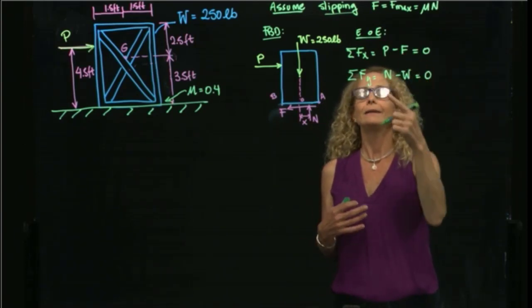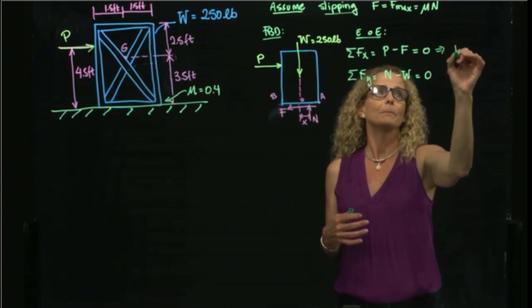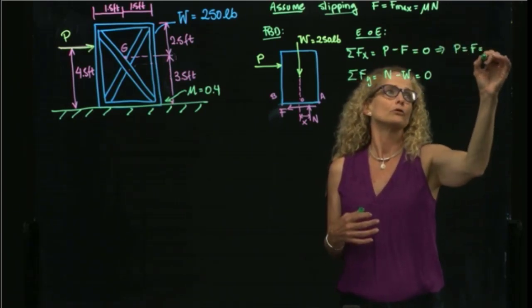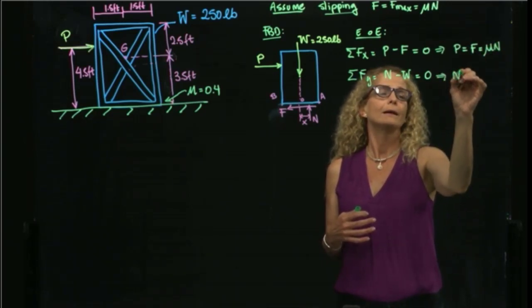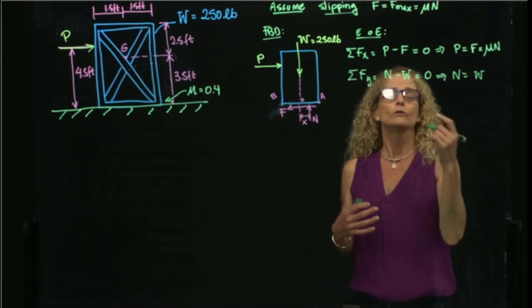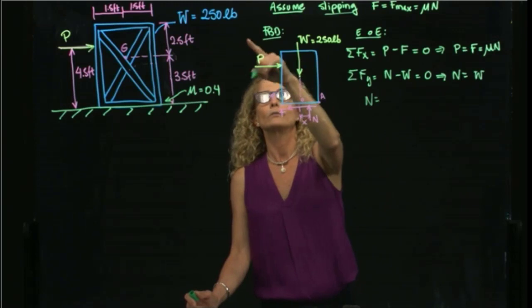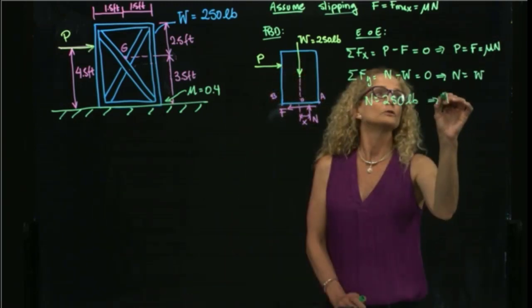I know that F is equal to mu times N. So I can say here that P is equal to F, and that is equal to mu times N. And from here, N is equal to the weight. So here, very easy, I am able to find that N is equal to 250 pounds for speed.